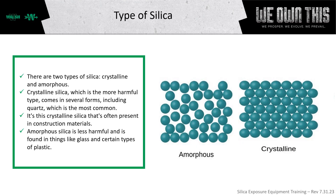There are two types of silica: crystalline silica and amorphous silica. The difference lies in their atomic structure. Crystalline silica, which is the more harmful type, comes in several forms, including quartz, which is the most common. It's this crystalline silica that's often present in various construction materials. Amorphous silica is less harmful and is found in things like glass and certain types of plastic.